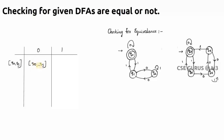q0 on 0 goes to q0, and q3 on 0 goes to q3. Now check whether both states in the pair are final, both non-final, or one final and one non-final. If both are final — no problem. If both are non-final — no problem. If one is final and one is non-final, we stop and say both DFAs are not equal. Here, q0 is a final state and q3 is also a final state, so we continue.